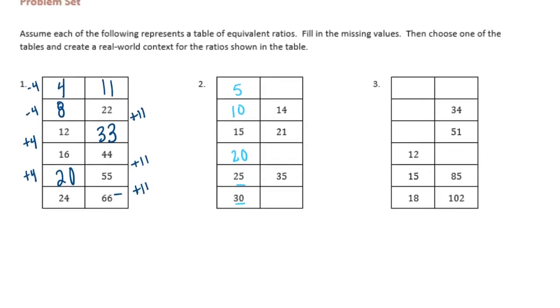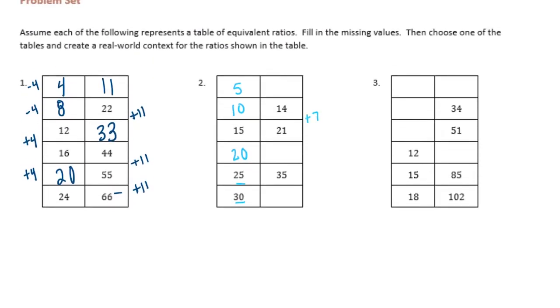So I'm going to add 7 here. 21 plus 7 is 28, and then make sure it works here. Yep, 28 plus 7 is 35, plus another 7 would be 42. And then subtract 7 for this one, and we get 7.